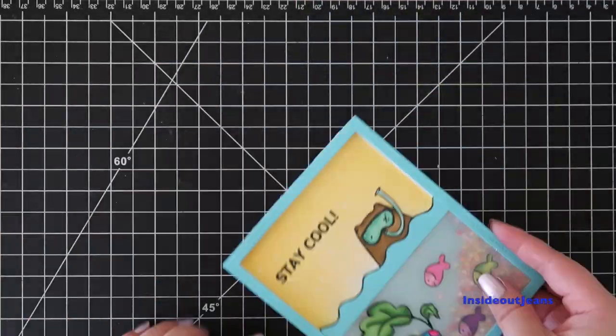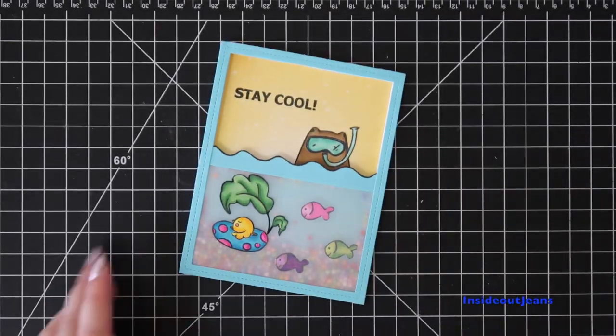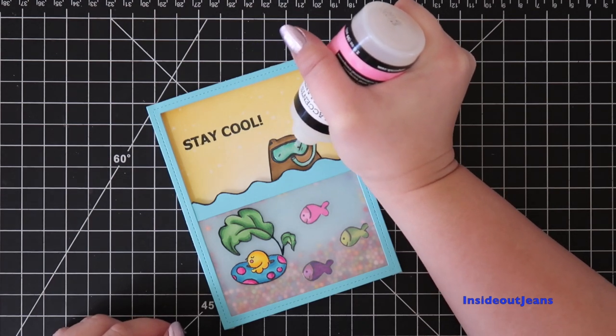I'll take that and adhere it to a card base. For a finishing touch, I'm using Glossy Accents to add to his scuba gear so it looks a little shiny.